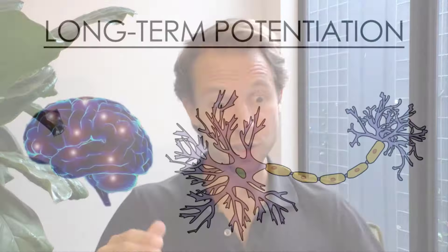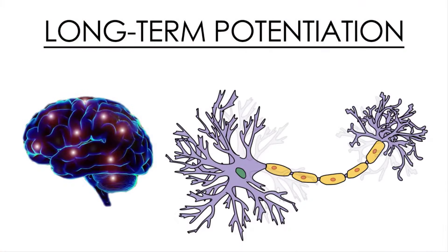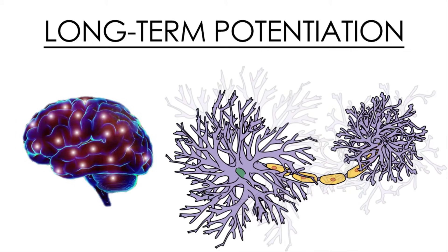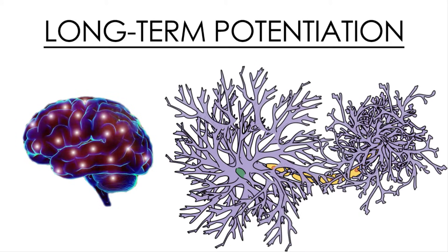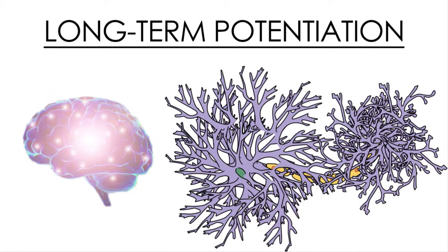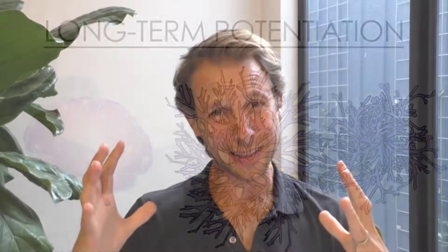Interestingly, when we're awake just living our lives, our brain almost exclusively does long-term potentiation — it's constantly growing new networks, talking to itself. This is actually a problem, because imagine if all the brain did was continue to grow and expand; eventually you'd run out of space and this whole thing would just mush in on itself or explode. So how do we combat this? Enter sleep.